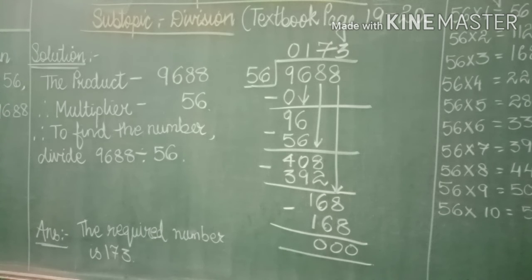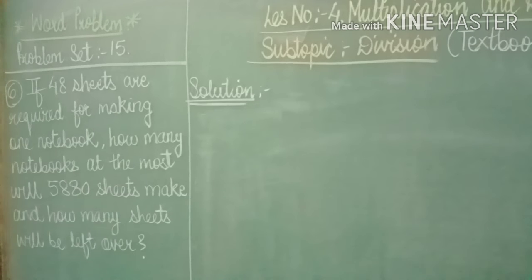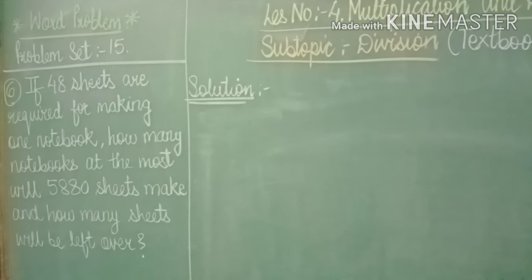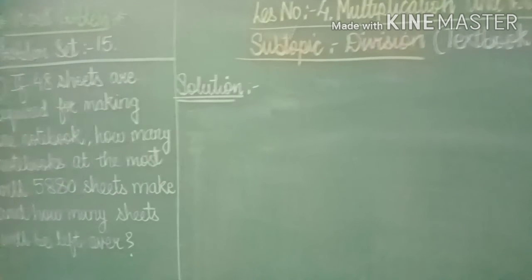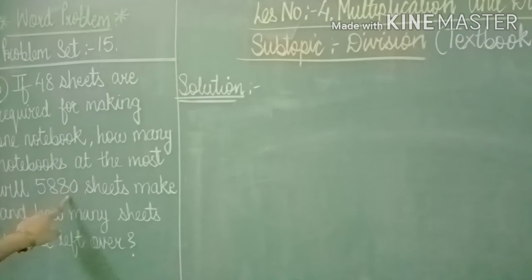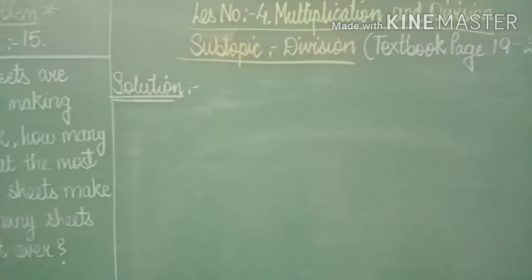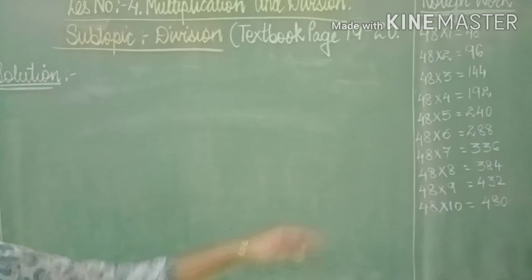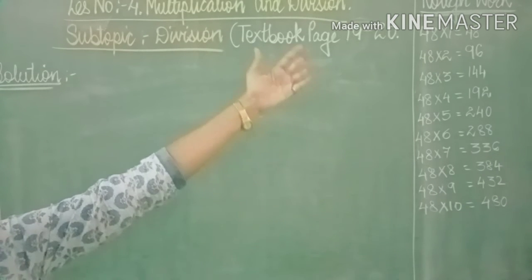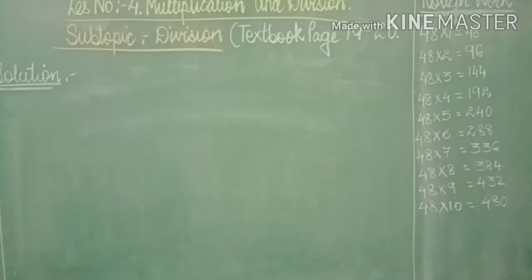Now let's do the sixth question. If 48 coordinate sheets are required for making one notebook, how many notebooks at the most will 5,880 sheets make and how many sheets will be left over? They have asked us to find the number of notebooks and the number of sheets left over. So first of all we are going to write the solution, and to the right hand side corner we will be writing the 48 table. I have written the rough work for 48. Now let's start with the solution. We have to divide the total number of sheets by the number of sheets required to make one book.